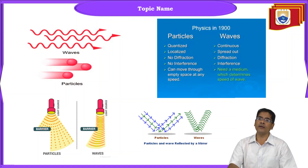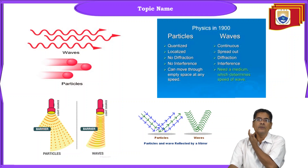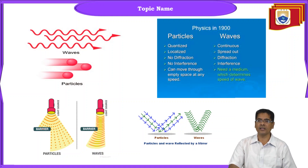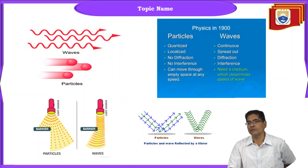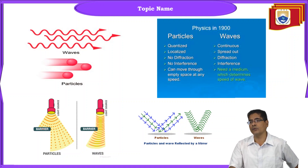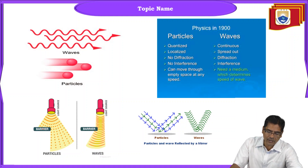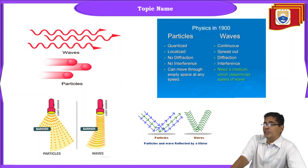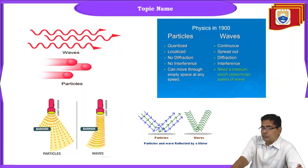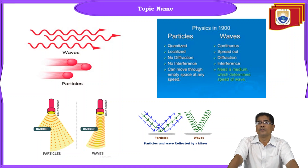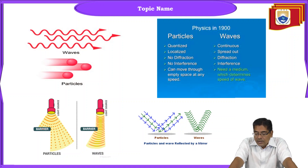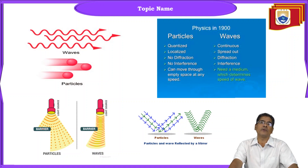Waves are continuous and can spread out at larger distances. Waves can be diffracted — the bending phenomenon of light is called diffraction. Waves can be interfered: the algebraic sum of the displacements y1 and y2 gives rise to interference. Waves need a medium to propagate, and that medium determines the speed of the wave.